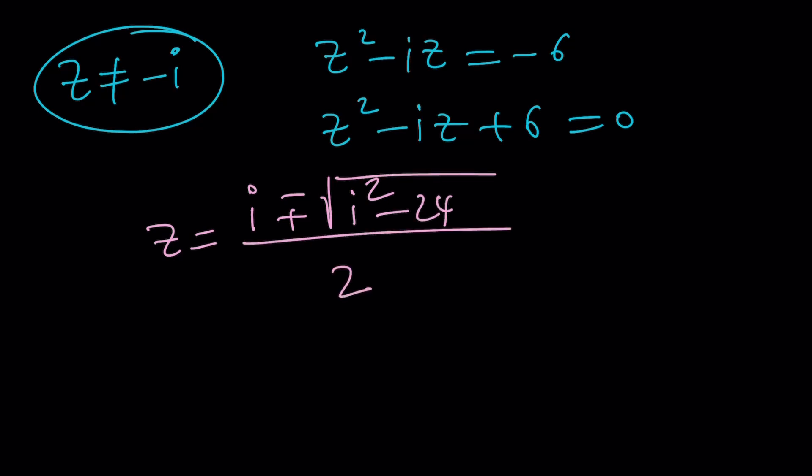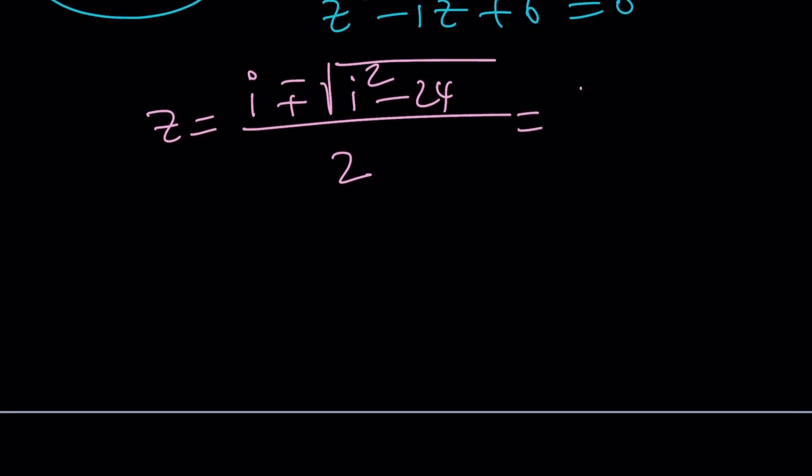I squared is negative 1. Negative 1 minus 24 equals negative 25. The square root of negative 25 is plus minus 5I. So, this becomes I plus minus 5I divided by 2. And that means I plus 5I divided by 2, which is 3I. Or I minus 5I divided by 2, which is negative 2I.